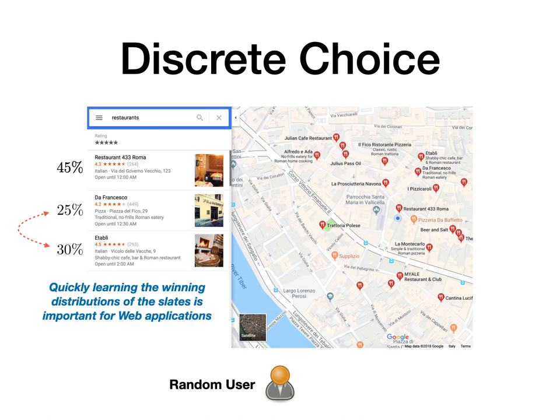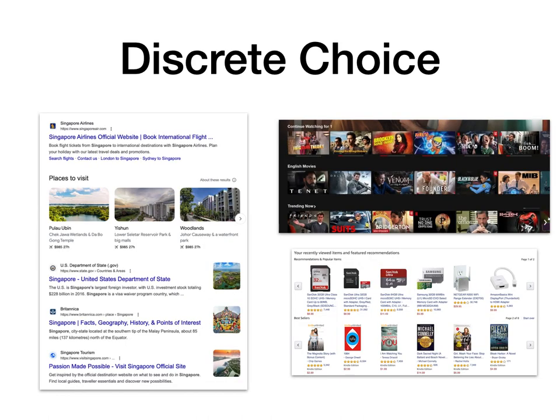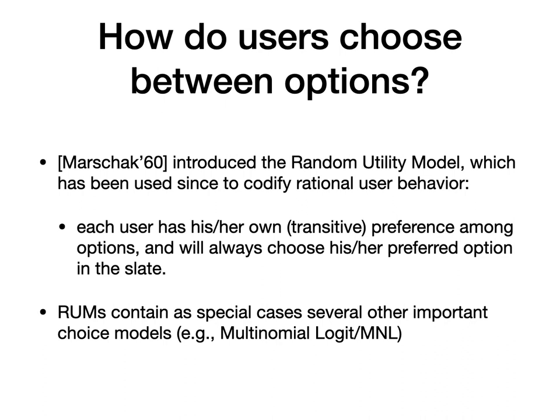Discrete Choice is important in many different web applications. One is definitely the maps one, but we also have the 10 blue links on the left, or choosing a movie to see tonight — that's the top option — or maybe deciding what to purchase, that's the bottom options. And how do users choose between these options?